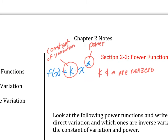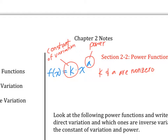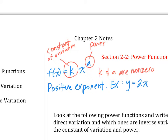You have two kinds that you may see: direct variation or inverse variation. Direct variation means that you have positive exponents. For example, you have something like y equals 2x. So 2x is the power function — k is 2, the power is 1, and that positive exponent means it's direct variation. Direct variation means that as x increases, y is going to increase. So if you put more money in your bank, the interest will grow.